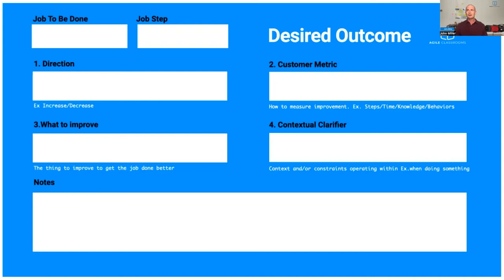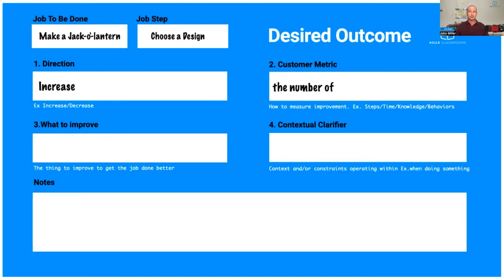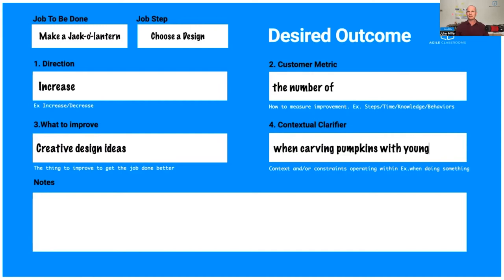There's a formula you can use — just like user stories have a template, there's a desired outcome card. You can track: what's the job to be done, what's the job step (e.g., choose the design), what's the direction of improvement you're trying to make? Use 'increase' or 'decrease' to kick it off — or minimize, maximize. Then the metric for the customer: the number of something, or time, current level of knowledge, even behaviors. And optionally a contextual clarifier — 'when carving pumpkins with young kids' — that will inform your solution.